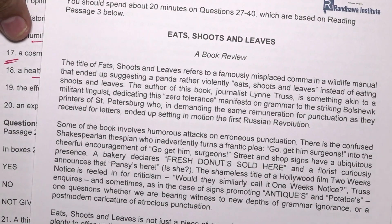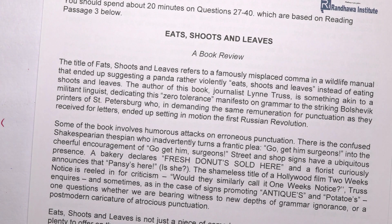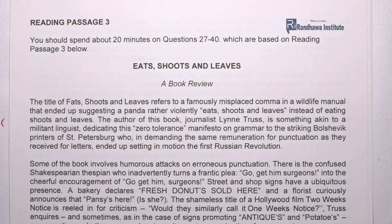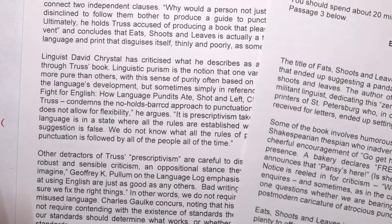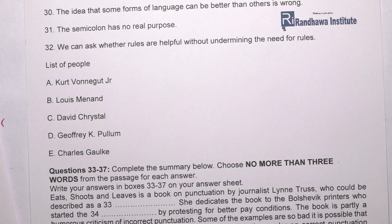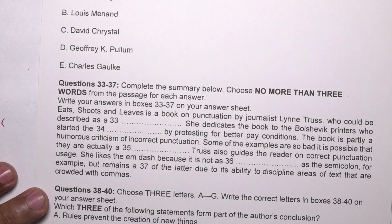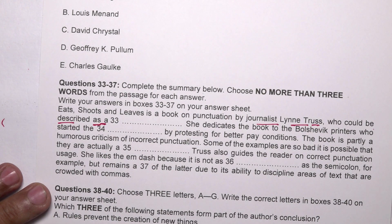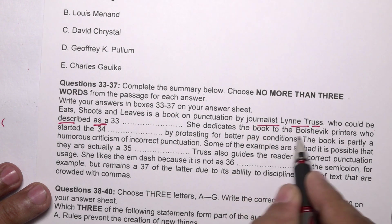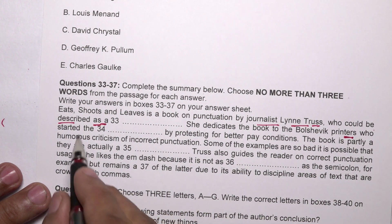Now we are having Reading Passage 3: 'Eats Shoots and Leaves.' It is a book on punctuation by a journalist who could be described as a she. She dedicates the book to the Bolshevik printers who started the dash.